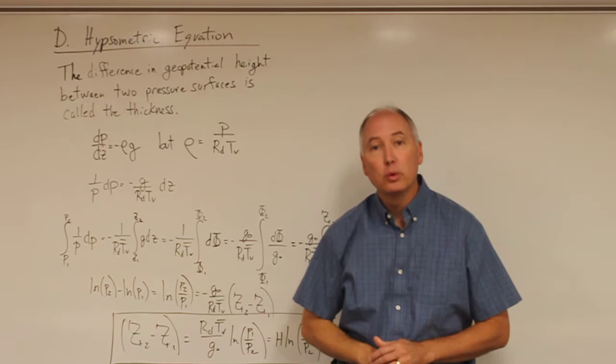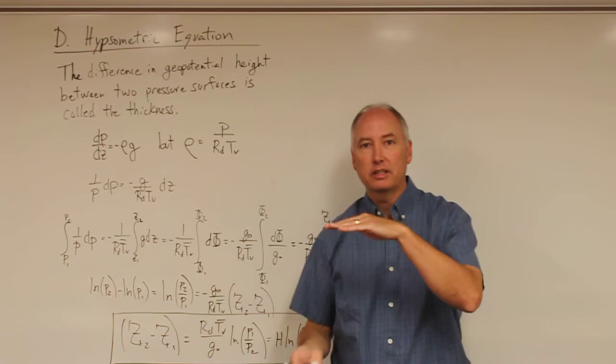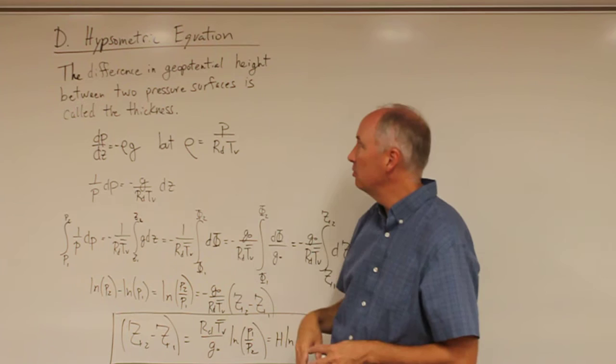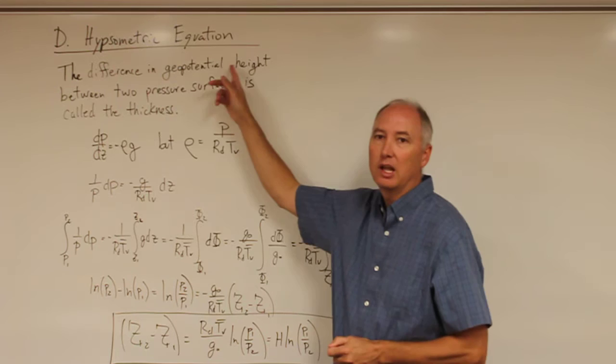In this lecture, we're going to talk about the hypsometric equation. The hypsometric equation is essentially trying to define what the thickness of a layer is. If we take the difference in geopotential height between two pressure surfaces, we're going to call that the thickness.